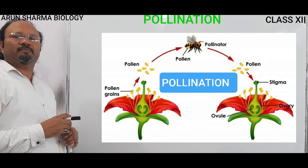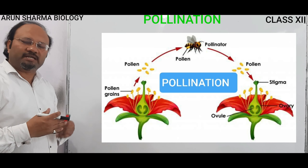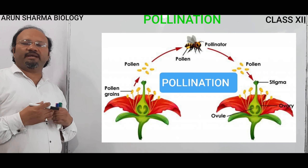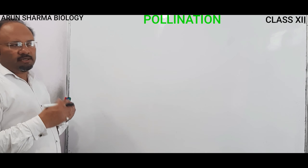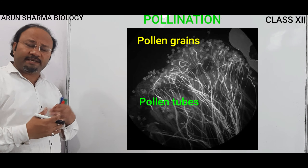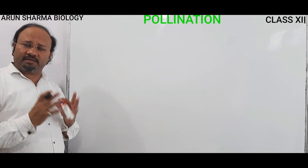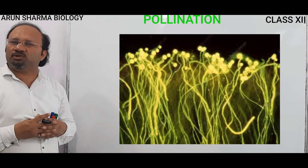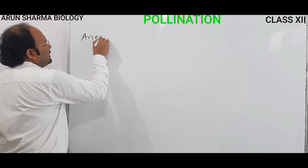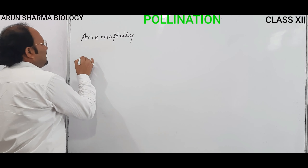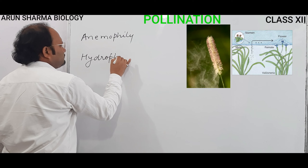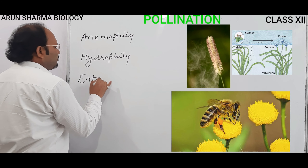Hello everyone. Today we are going to study about different types of pollination in plants. In the previous lecture we discussed different types of pollination like self-pollination, cross-pollination, and different types of pollinating agents. Now we are moving on to Part 2, where we will discuss anemophily, hydrophily, and entomophily.